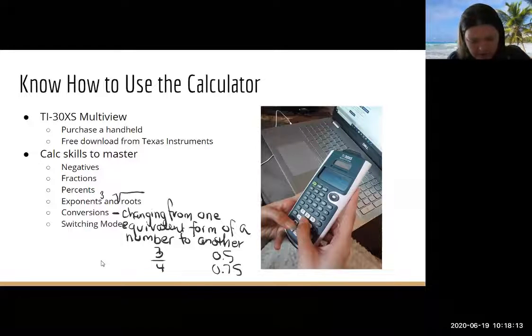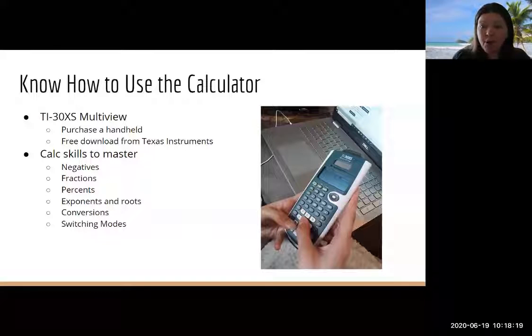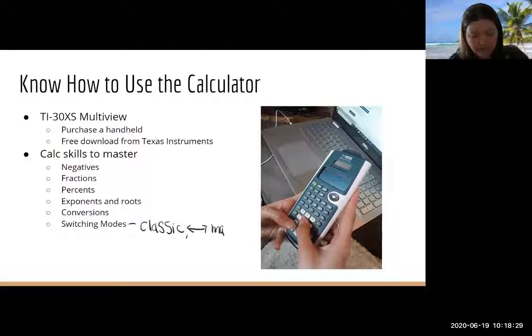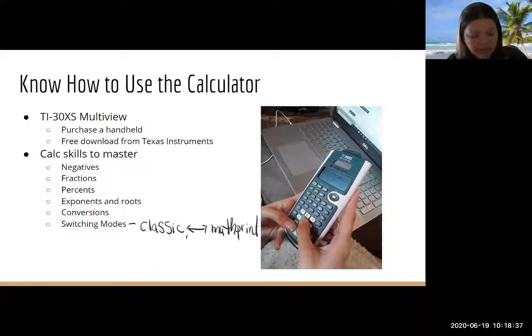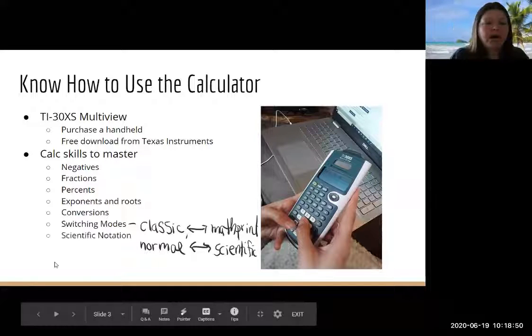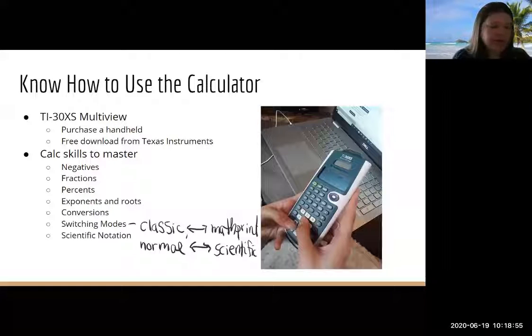And another thing you need to know how to do is to switch modes. Our calculator behaves differently depending what mode it's in. For the GED, you need to be able to go through classic mode to math mode. They call it math print. Depending on what question you're answering, one or the other might be more useful. So we'll be practicing that as we work together. But another thing you need to be able to click between is the normal and the scientific mode. And this comes up on both the math test and the science test. And then scientific notation is another thing that you should want to know how to do in your calculator.